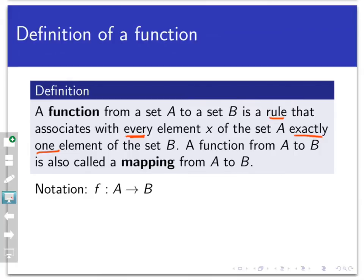Notation-wise, we call our functions by names. For example, if the function is called f, we write f colon A — here's my set of inputs — arrow B — here's my set of outputs. This arrow is suggestive of taking things in A and changing them into things that are in B.